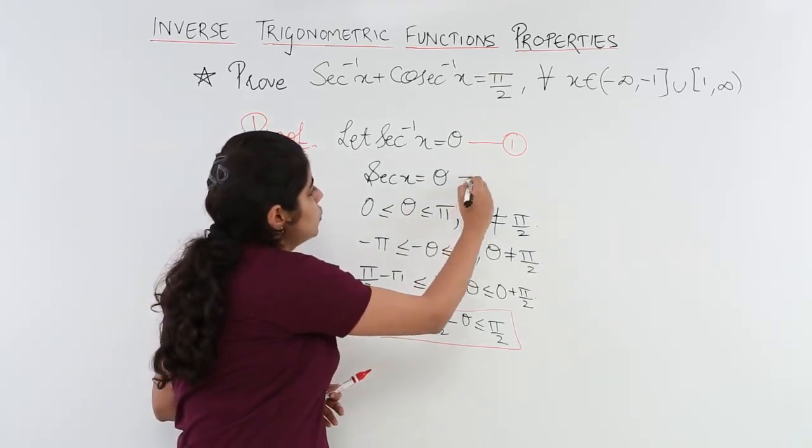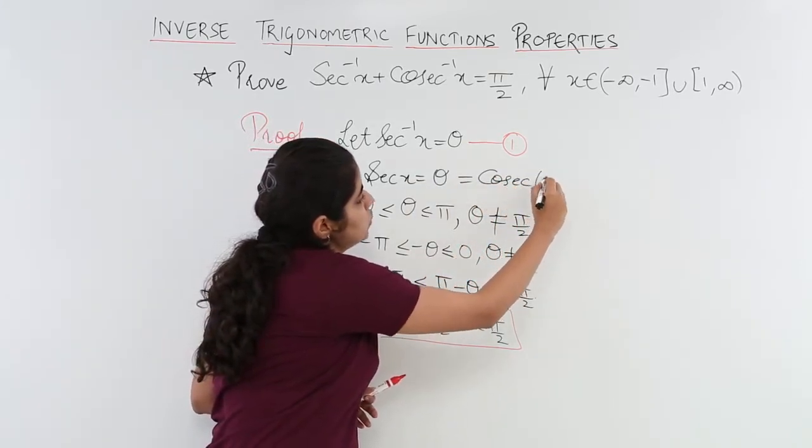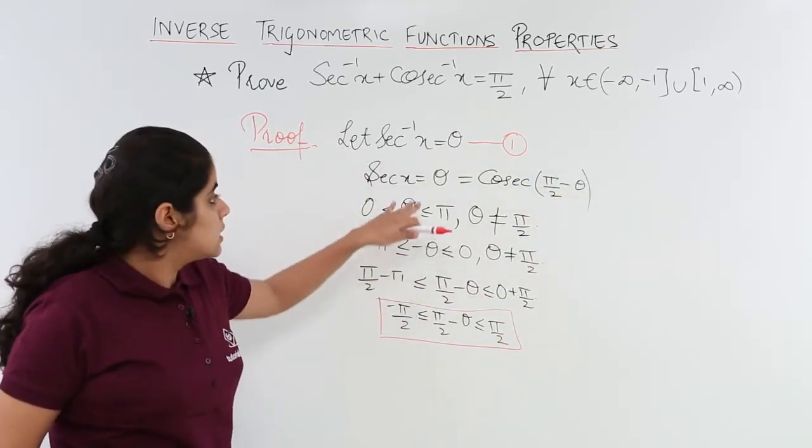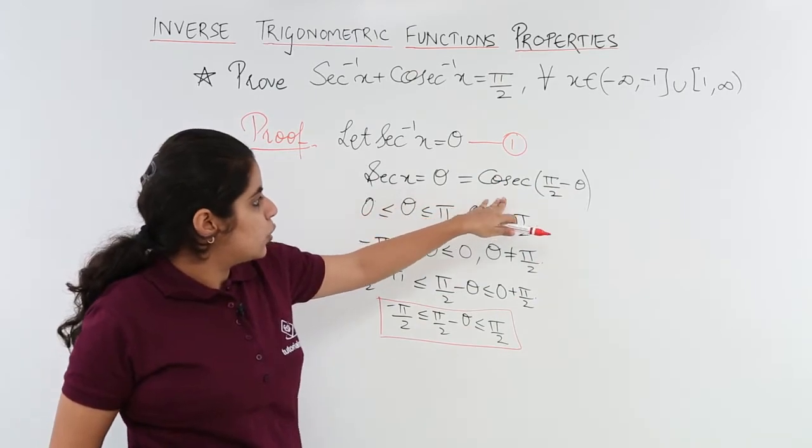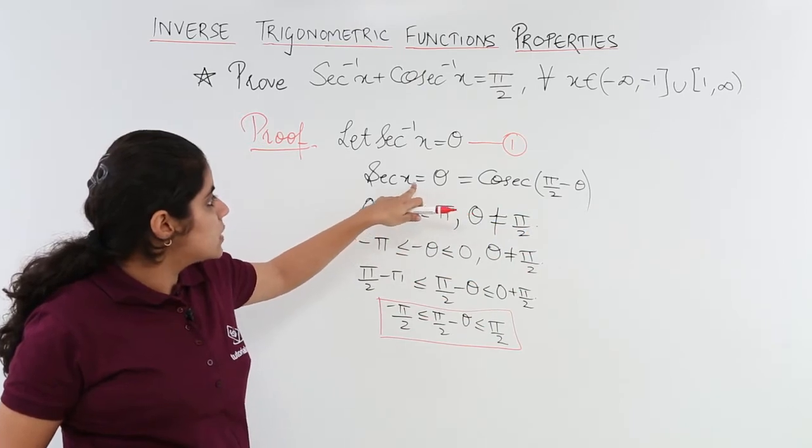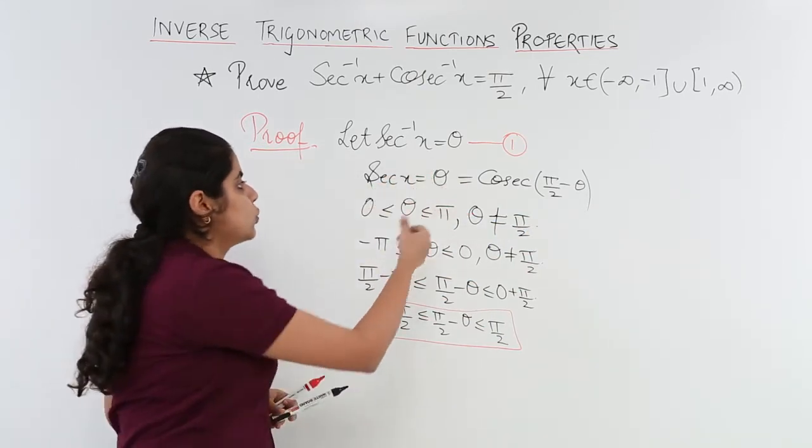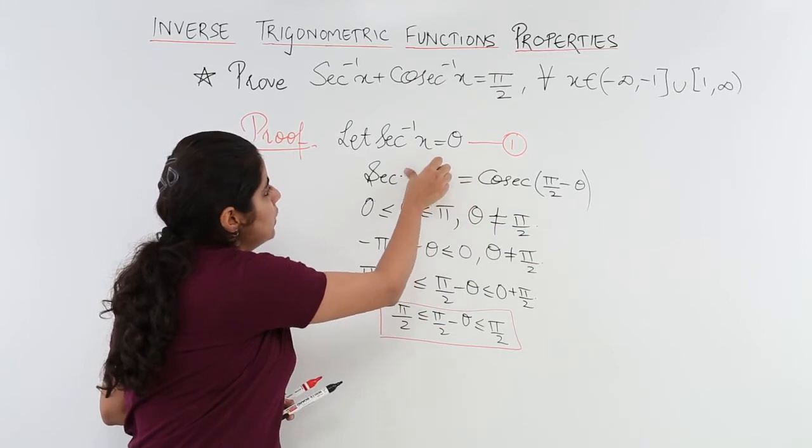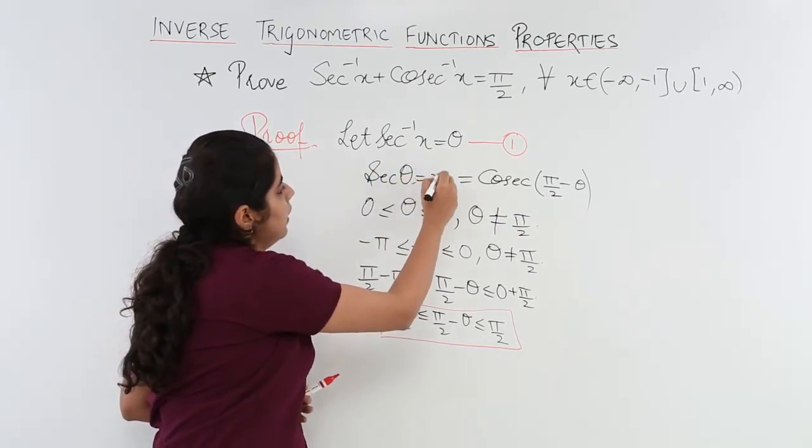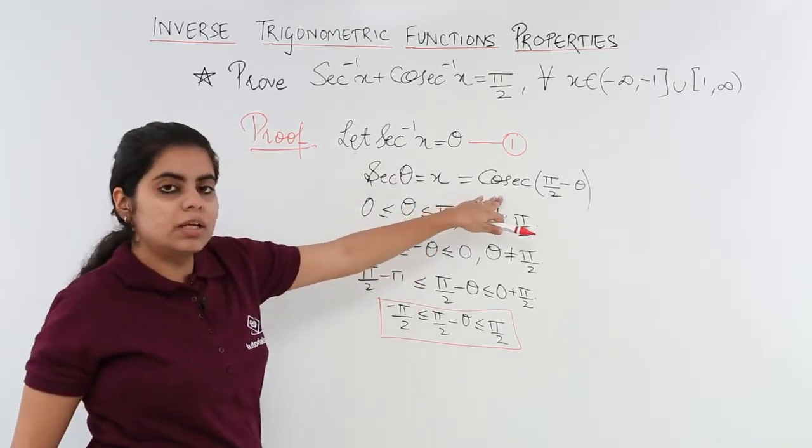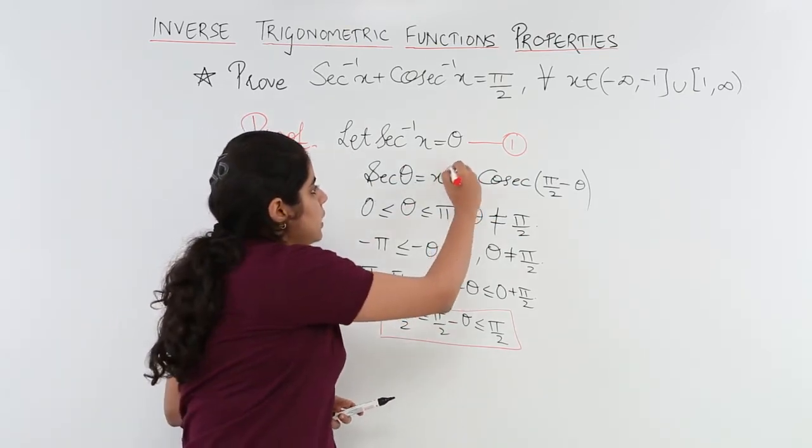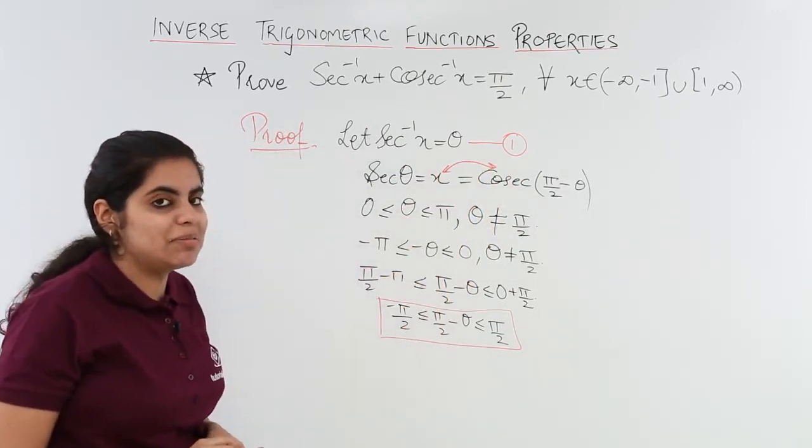I can expect sec x to be written as cosecant(90° - θ). Sec x = csc(90° - θ) where x = sec θ. I know that sec⁻¹x = θ, so x = sec θ. This can be written as csc(90° - θ). Now observe that x = csc(90° - θ).